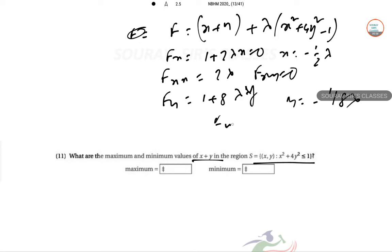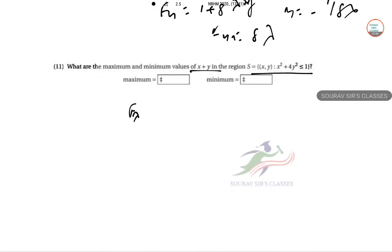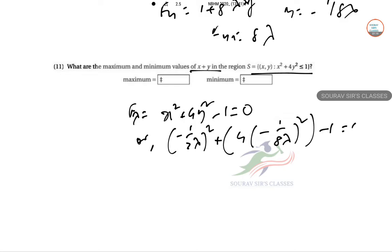fyy equals 8 lambda. Since lambda is the same in both equations, we can substitute these values. From the constraint x squared plus 4y squared minus 1 equals 0, we substitute: 1 over 4 lambda squared plus 4 times 1 over 64 lambda squared minus 1 equals 0.